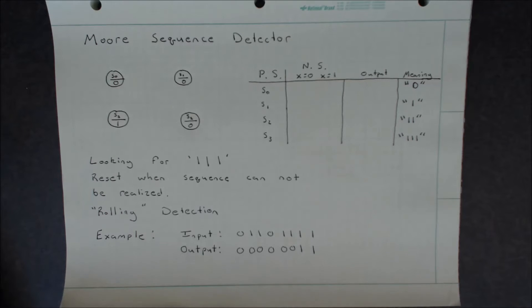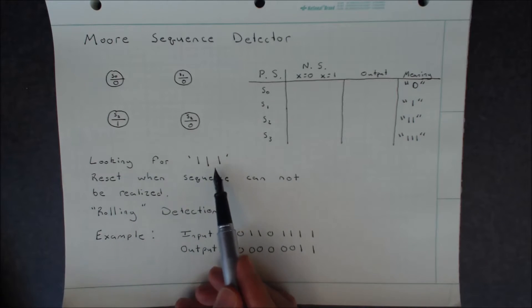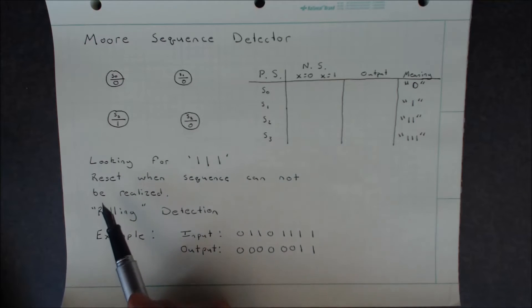If we look at the definition of what we're looking to do, we're looking for the sequence of 111 to occur. Now it's also defined that we're going to reset when the sequence cannot be realized, and we're also going to have rolling detection.